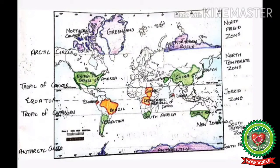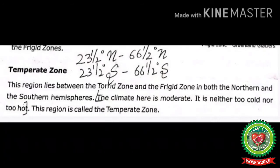Here you can see the world map. Countries lying in the North Frigid Zone are Northern Canada, Greenland, and Northern Russia. In the South Frigid Zone there is only one continent, which is Antarctica.